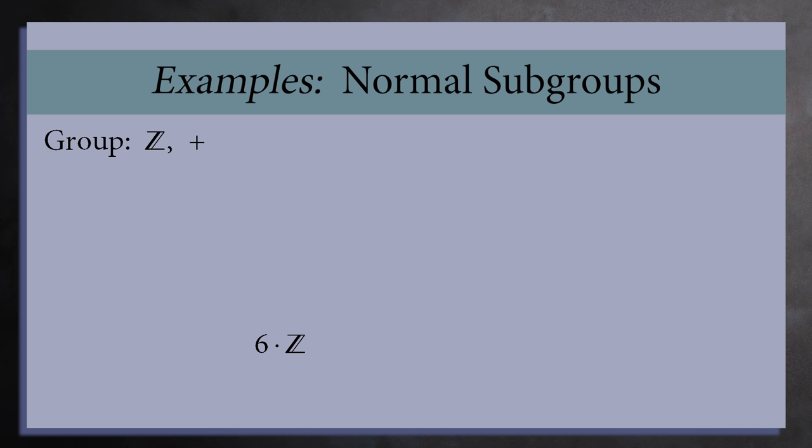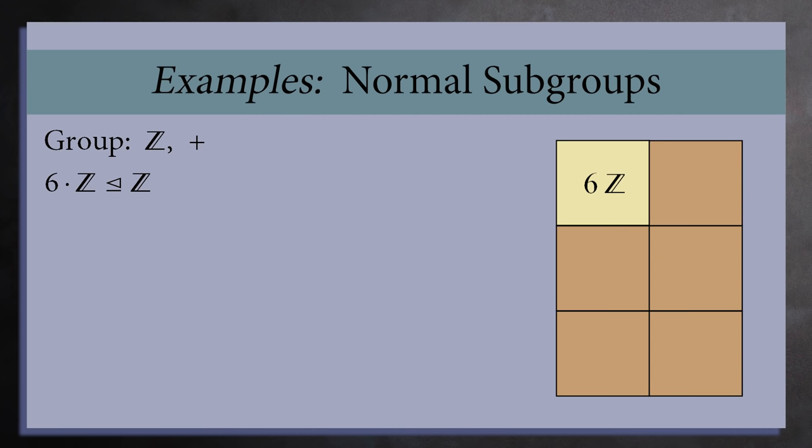Let's look more closely at the multiples of 6. This is a normal subgroup of the integers, so we write it like this. This normal subgroup partitions the integers into 6 cosets.